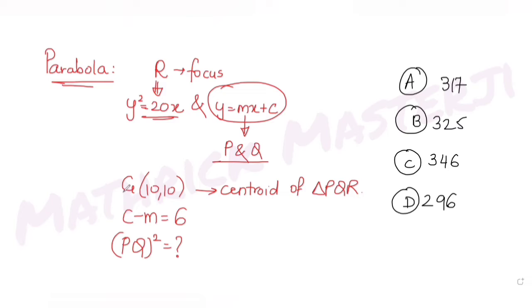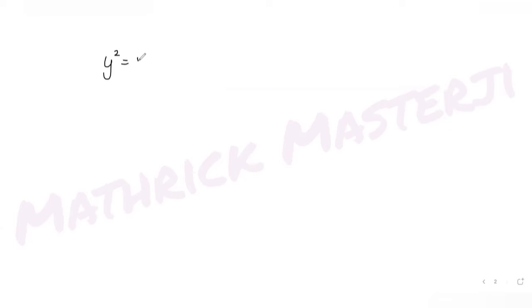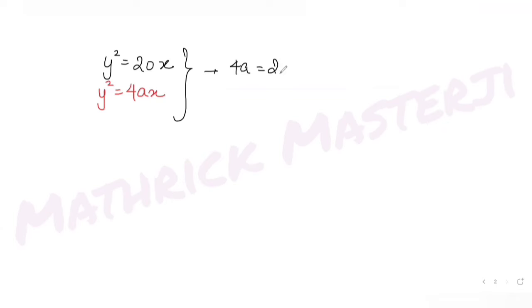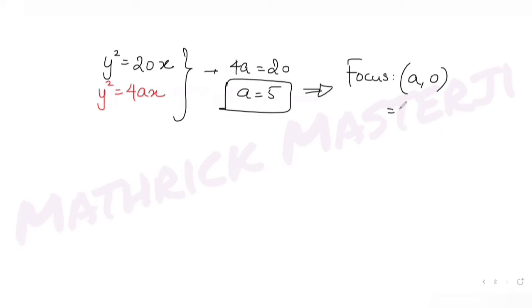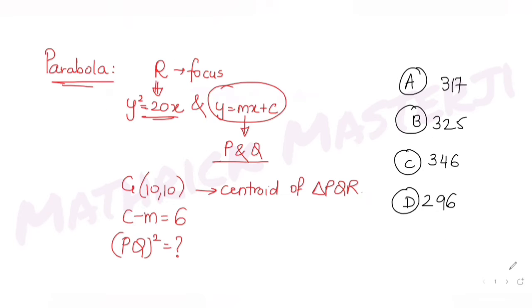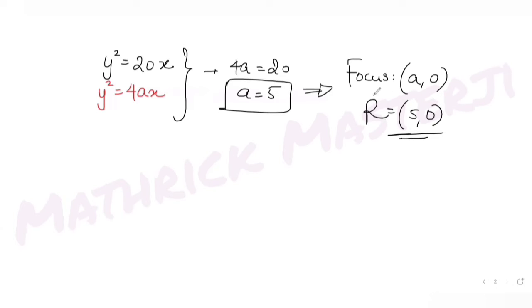Let's solve this. Writing the equation of the parabola as y² = 20x and comparing with the general form y² = 4ax, we get 4a = 20, so a = 5. The focus coordinates are (a, 0) = (5, 0). Since R is the focus, R = (5, 0).